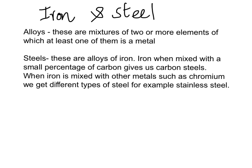In this video lesson we're going to be looking at iron and steel. Steel are generally types of iron alloys. We are also going to be looking at what alloys are. Alloys are much more useful than pure metals because they have more desirable properties such as strength, hardness, and their physical appearance is much better than pure metals. These are mixtures of two or more elements of which at least one is a metal.